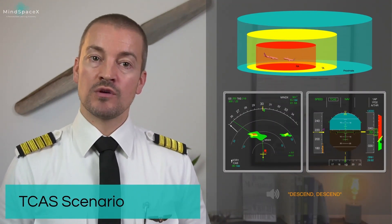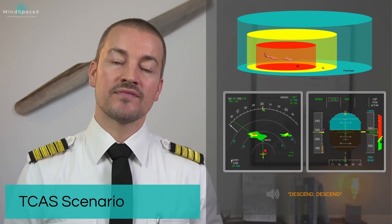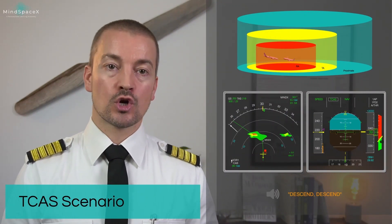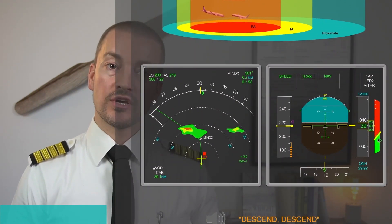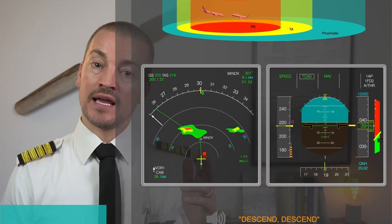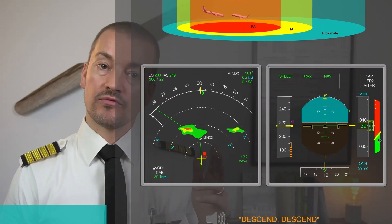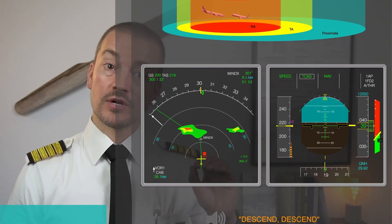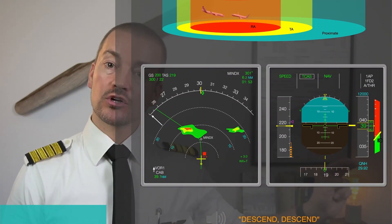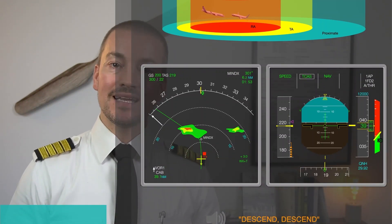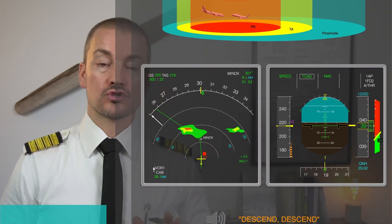The Resolution Advisory is triggered when the aircraft is about 25 seconds away from the closest point of approach. This will trigger on the ND display a red square for the traffic indication, together with an aural warning 'traffic, traffic,' and vertical commands on the vertical speed indicator on the PFD for the crew to fly.